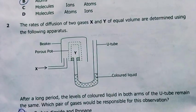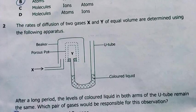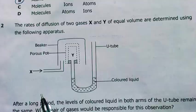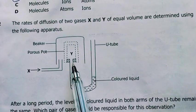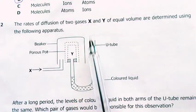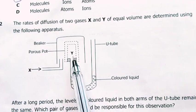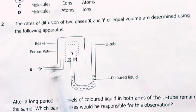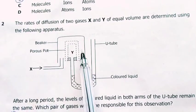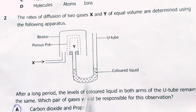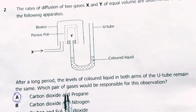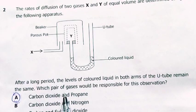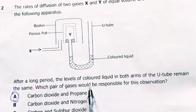Question 2. The rates of diffusion of two gases, X and Y, of equal volume are determined using the following apparatus. There's a beaker, a porous pot, colored liquid in a U-tube. Gas Y and gas X are entering into this inverted beaker. After a long period, the levels of colored water in both arms of the U-tube remain the same. Which pair of gases would be responsible for this observation?